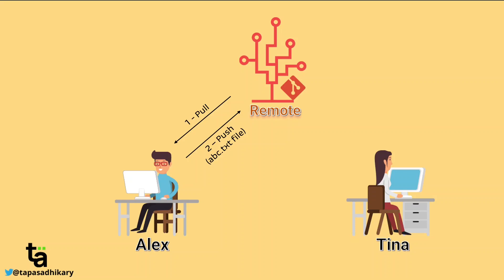At the same time, Tina — without being aware of what Alex has done to abc.txt — also makes changes to the same file and tries to push it. But since her changes are behind Alex's, Git rejects the push. Tina understands that someone has changed abc.txt, so she pulls the changes from the remote. But after pulling, she gets a merge conflict and now has to fix it.